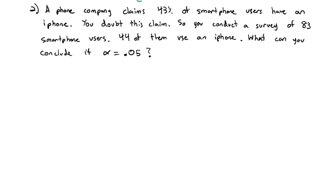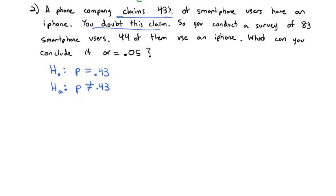Our null hypothesis has to be that our proportion equals something — and that's the claim that the proportion equals 0.43. For the alternative hypothesis, we can either say the proportion is greater than, less than, or not equal to. There's no direction given in your doubt — you're not saying it's greater or less than, you just doubt that it's accurate. So this is going to be not equal to 0.43, and when it's not equal to 0.43, we have what's called a two-tailed test.